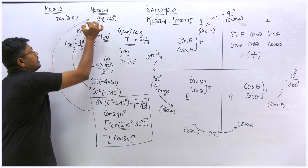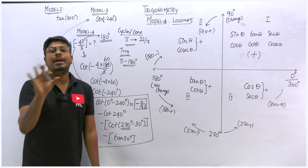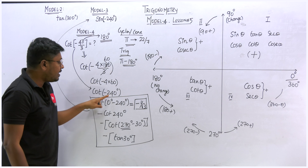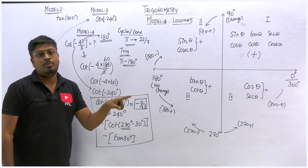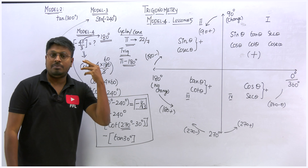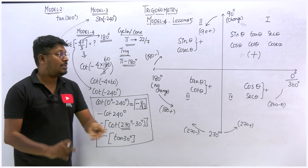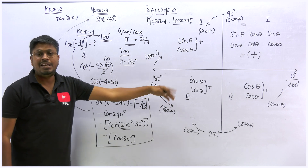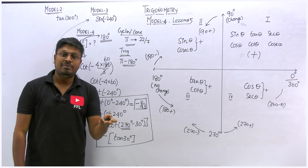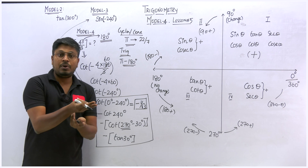So in model number 4, you convert pi into 180 and simplify the question. After simplification you will get a value in terms of model 1, 2, or 3 — positive or negative. Do not learn any new techniques or formulas beyond what we have already covered, because learning too many formulas is a headache and hard to recall during exams.